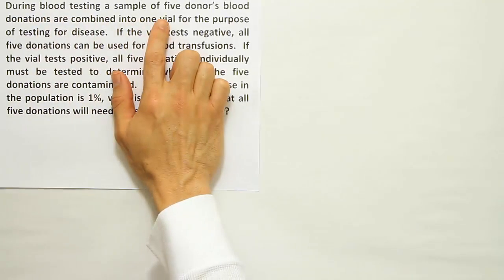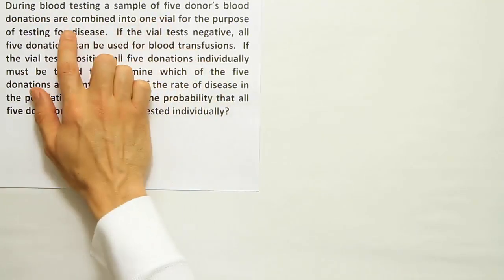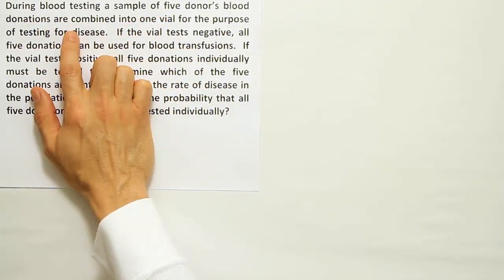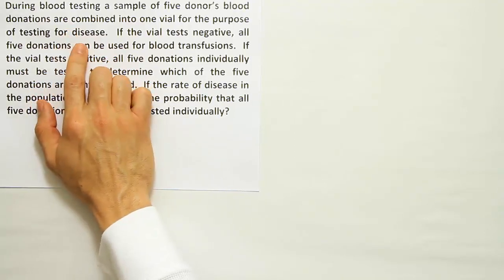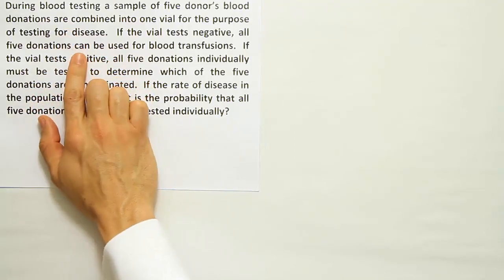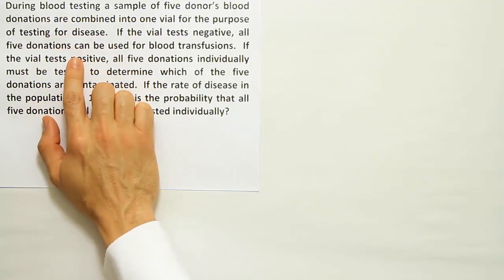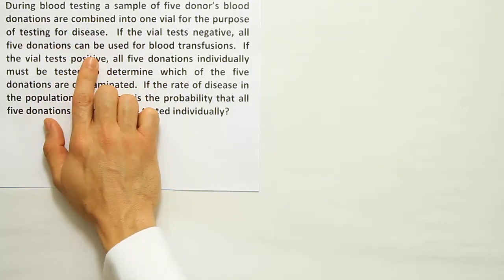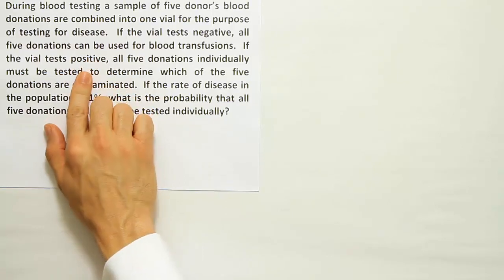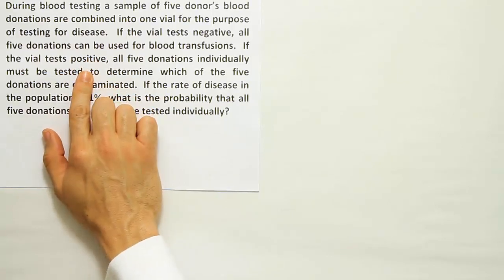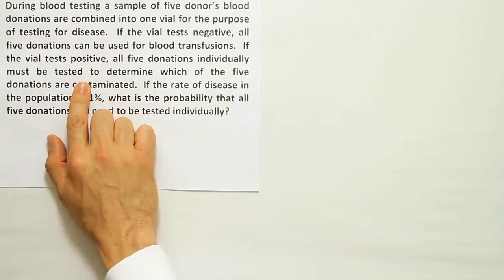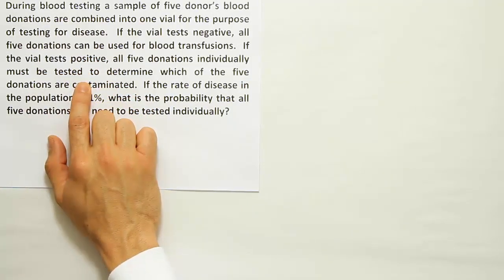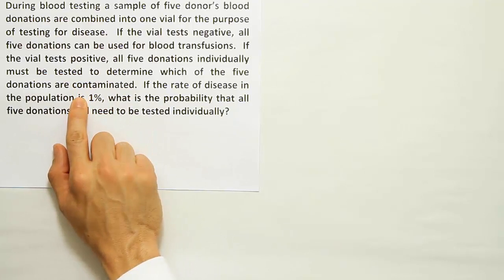During blood testing, a sample of five donors' blood donations are combined into one vial for the purpose of testing for disease. If the vial tests negative, all five donations can be used for blood transfusions. If the vial tests positive, all five donations individually must be tested to determine which of the five donations are contaminated.